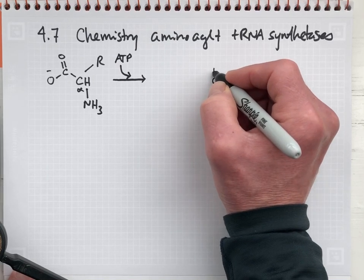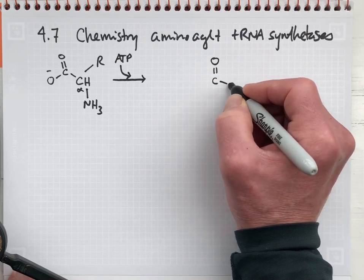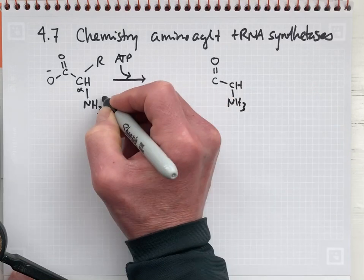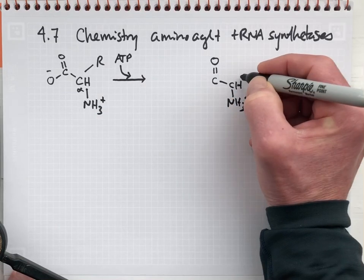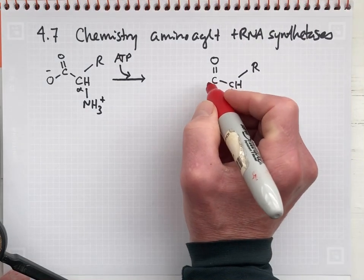And that means that we have here the structure of the amino acid, positive charge here, with its particular R group. And we've joined that to the structure of AMP.